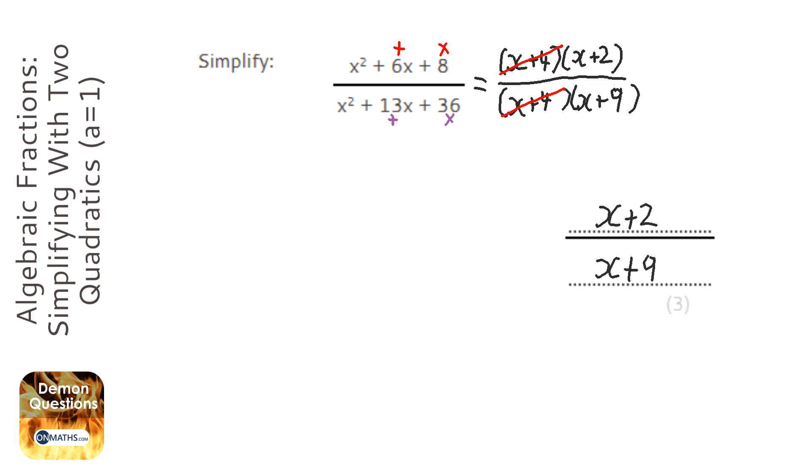Now, because x plus 2 is the only thing at the top and x plus 9 is the only thing at the bottom, we don't need the brackets for our answer. You don't lose marks if you've left them in. And the other thing you'll notice is because you'll always be left with the same bracket at the top and bottom,